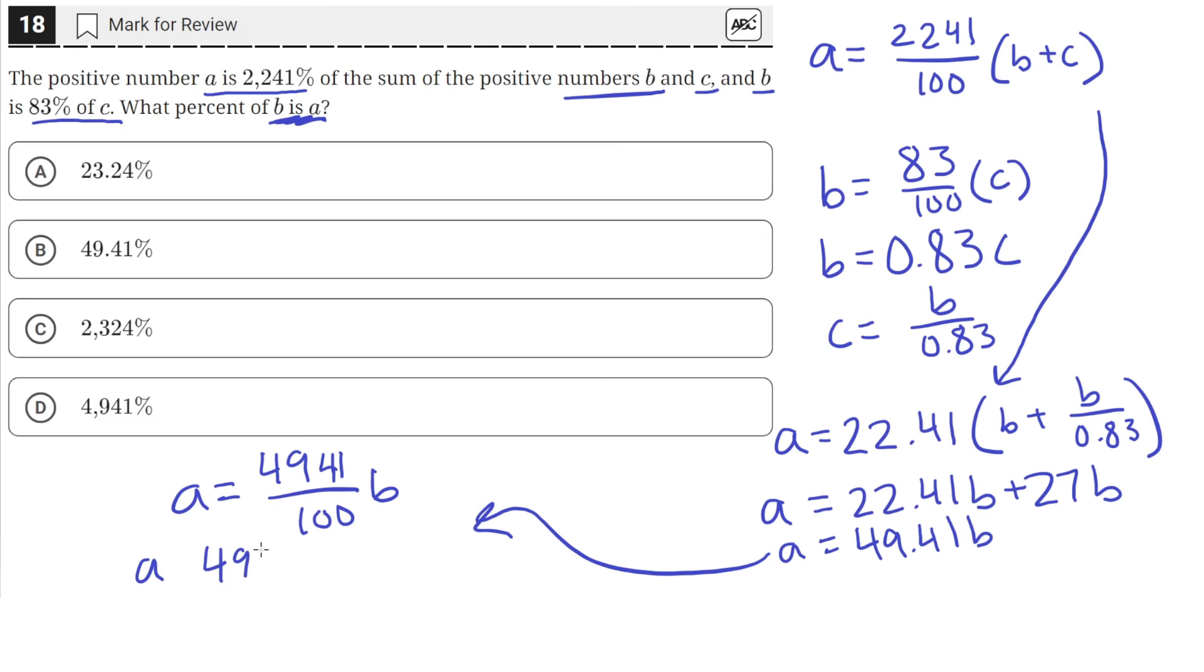41% of B. So the question asks what percent of B is A? So A is 49.41% of B. So the correct answer is D.